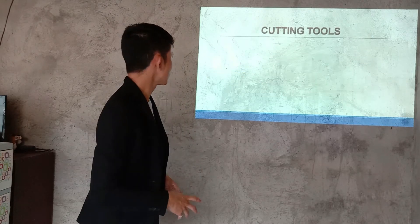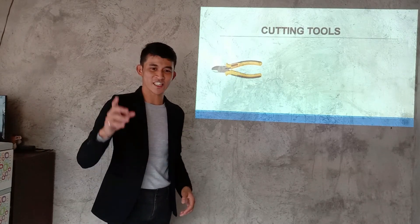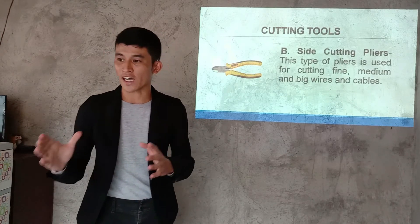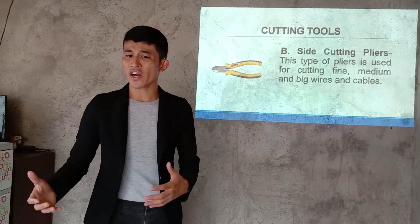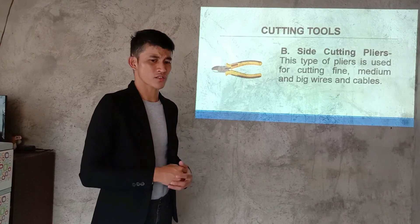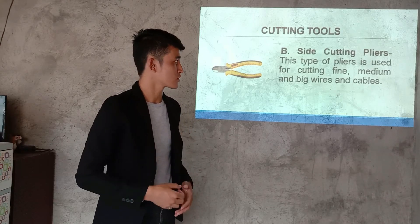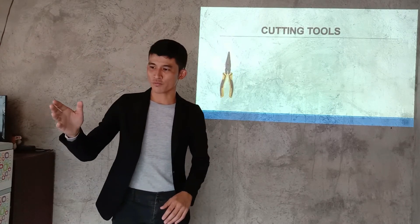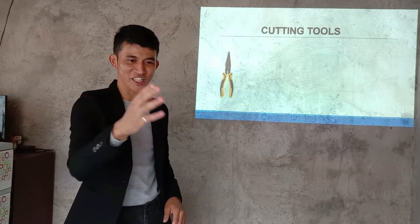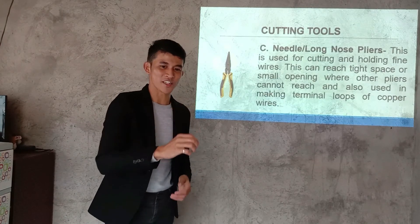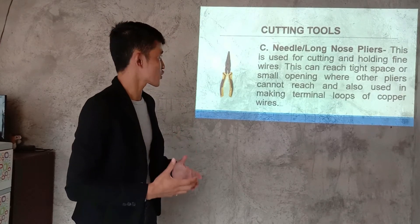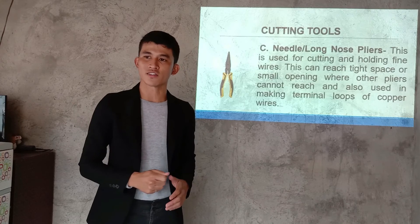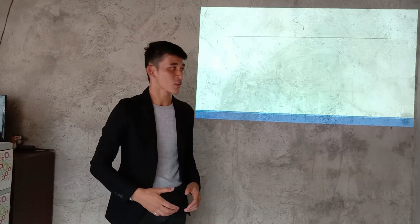Next — what do you call this one, class? Correct — that is side cutting pliers. This type of pliers is used for cutting fine, medium, and large wires and cables. As you can observe, the word 'cutting' — it is used to cut wires. Very good! Next one — yes, that is needle nose or long nose pliers. This is used in cutting and holding fine wires, but it is often used for holding wires.